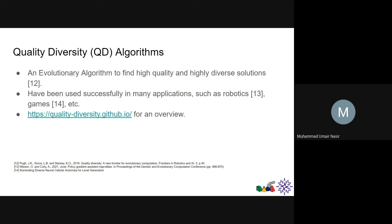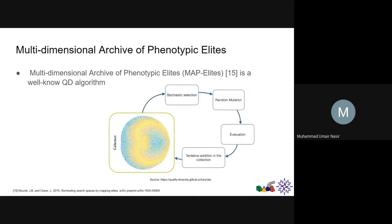Quality diversity algorithms in their raw form are also somewhat expensive, but comparative to other evolutionary algorithms, not as much. A well-known QD algorithm is MAP-Elites: multi-dimensional archive of phenotypic elites. We have a collection, or archive, where we store our solutions. Each individual is supposed to be of high quality and diverse from others. You randomly select an individual, perform random mutation or crossover, train it, evaluate it on your test data, and then send it back to the archive.